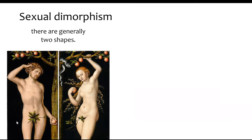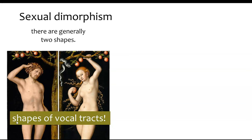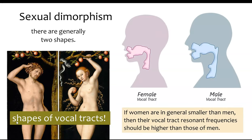A good place to start is with the physical differences between women and men. The term sexual dimorphism refers to the fact that there are generally two shapes — specifically of vocal tracts. Women are generally slightly smaller than men, and so we should expect that difference in size to correspond to a difference in resonant frequency, or in our case, formant frequencies.